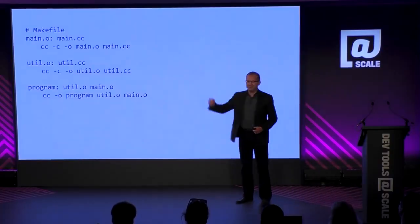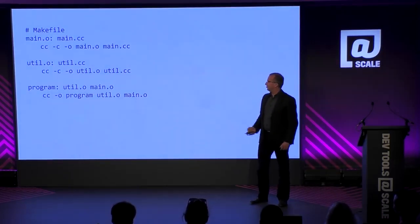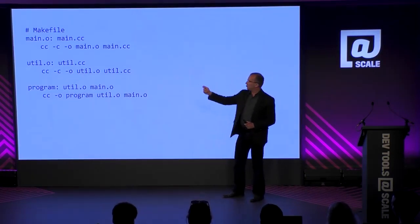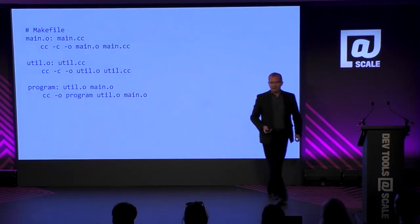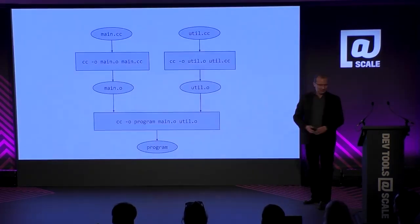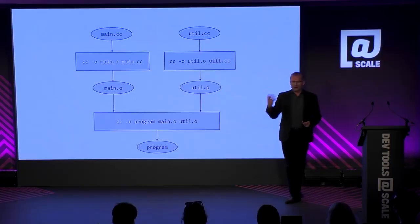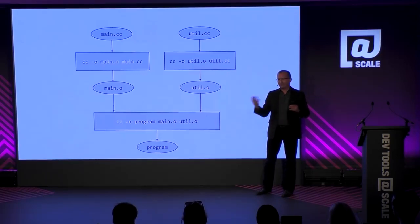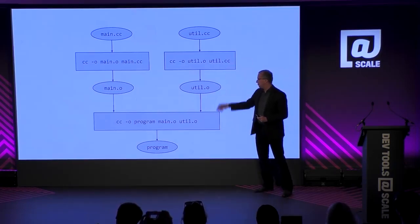So you write a Makefile — that's 1970s technology — and you write something like this. If you really think about what that is, you have your dependencies: your main object file depends on main.cc, there's a recipe to build that, same for util, and then you have a recipe to link them all together. What this actually is, in the business of doing builds, we call an action graph. It's really a graph where the oval things are files — the artifacts — and the boxes are actions, functions that take some input artifacts and produce some output artifacts.